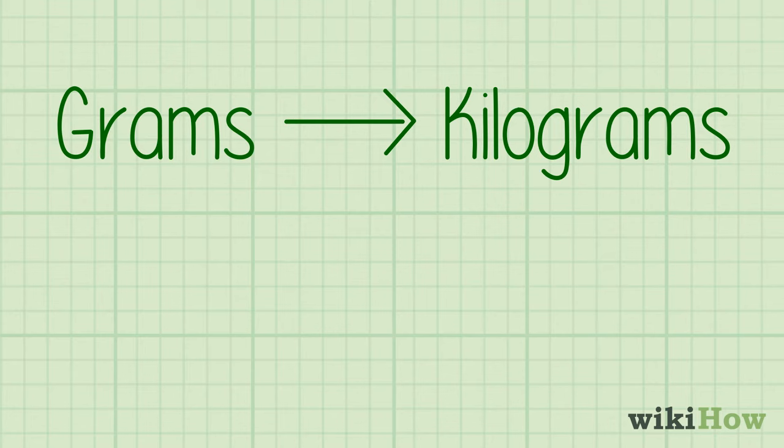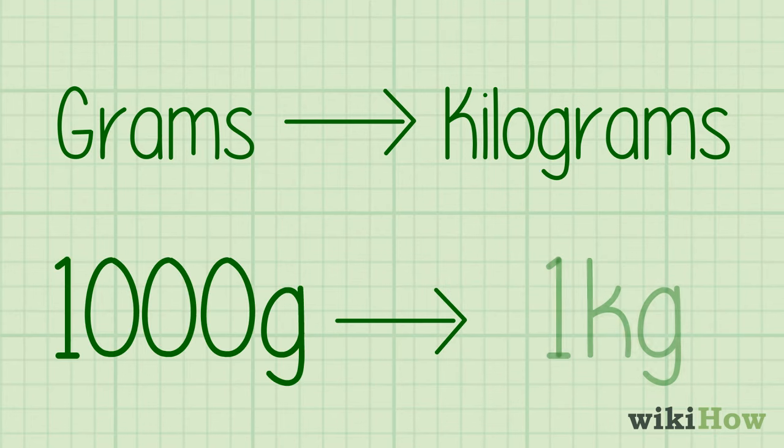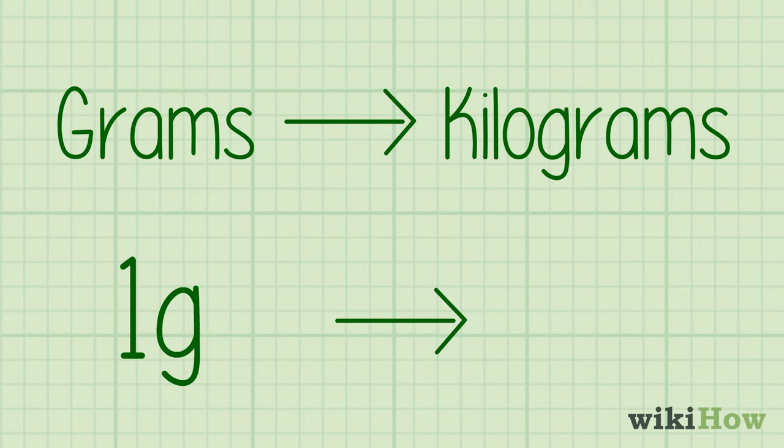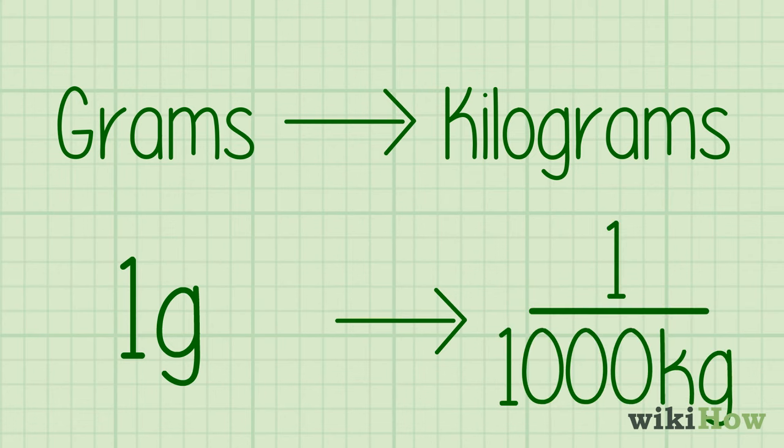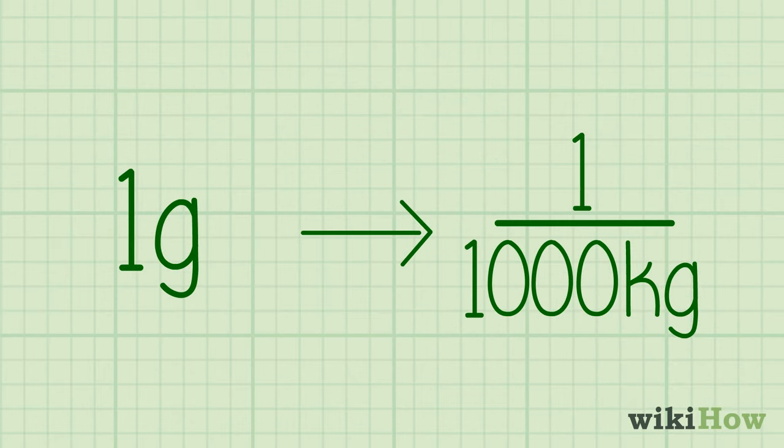To start, keep in mind that there are 1,000 grams in one kilogram. This means that one gram is equal to one one-thousandth of a kilogram. In other words, all you have to do is divide the number of grams by 1,000 to get kilograms.